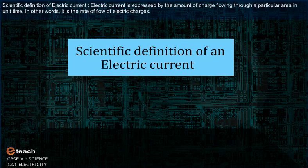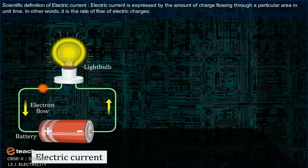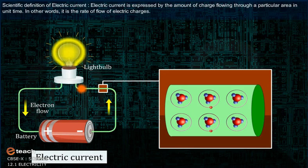Scientific definition of electric current. Electric current is expressed by the amount of charge flowing through a particular area in unit time. In other words, it is the rate of flow of electric charges.